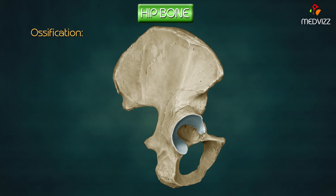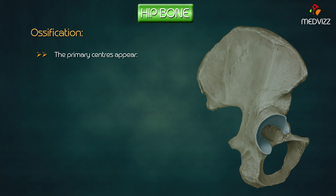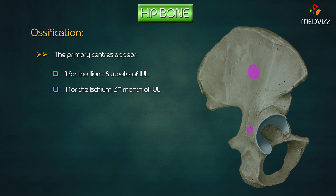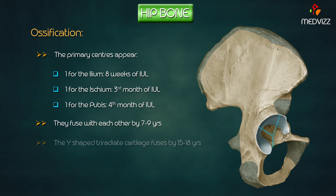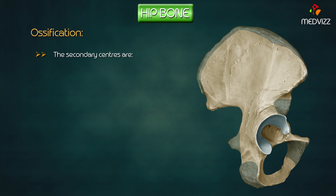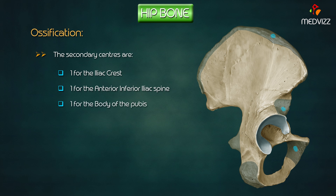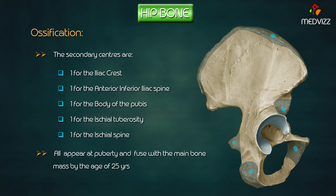The hip bone ossifies from three primary centers and five secondary centers. The primary centers appear as follows: one for the ilium at eight weeks of intrauterine life, one for the ischium at the third month, and one for the pubis during the fourth month. They fuse with each other by seven to nine years, and the Y-shaped triradiate cartilage fuses by 15 to 18 years. The five secondary centers are: one for the iliac crest, one for the anterior inferior iliac spine, one for the body of the pubis, one for the ischial tuberosity, and one for the ischial spine. All appear at puberty and fuse with the main bone mass by the age of 25 years.